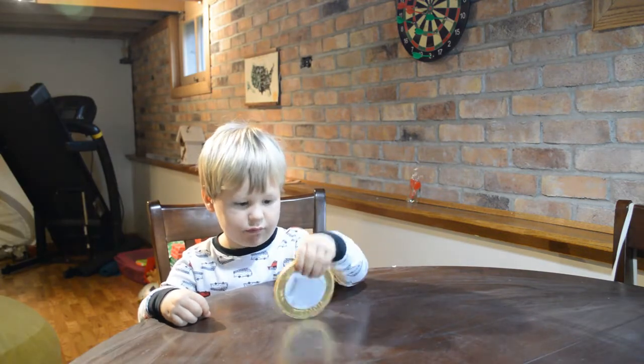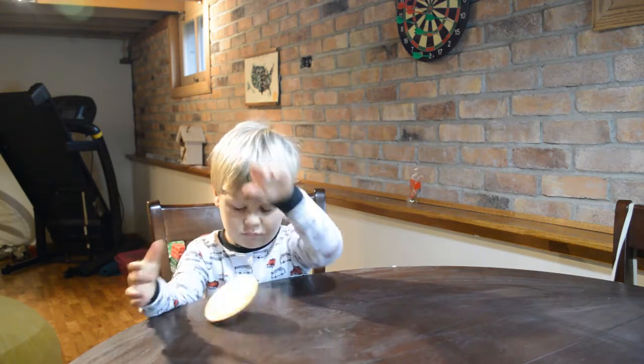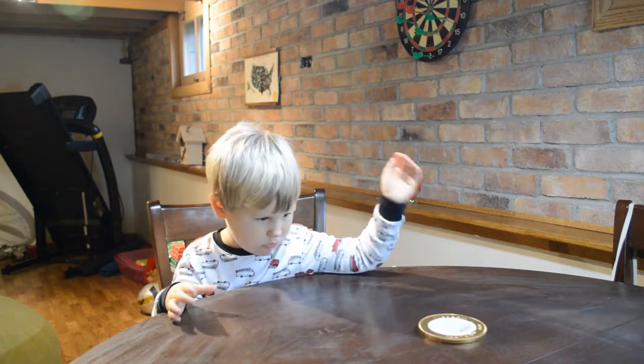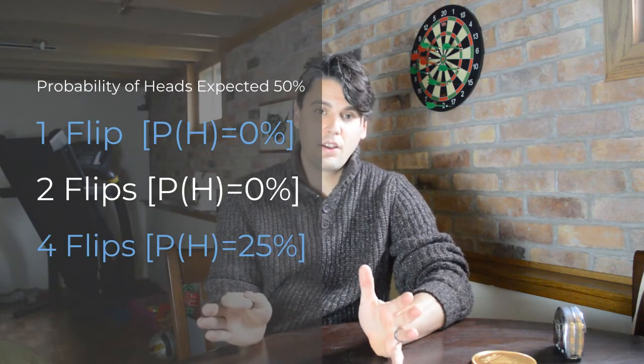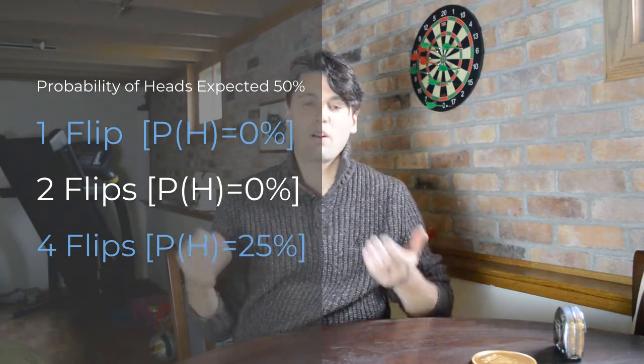The first flip was tails. The second time, heads. The third time, tails. So if I do that four times, the measurement I got was that the probability of heads was 25% — one quarter of the time I got heads. If we do that eight times — heads — and this time I got a 5/8 probability of heads.